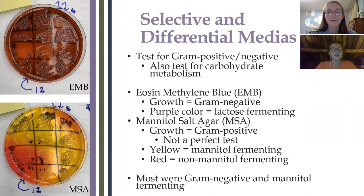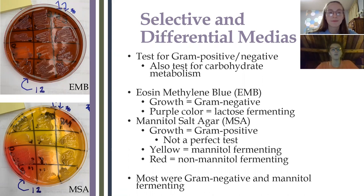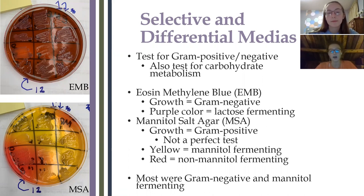We then used selective and differential media that test for gram positive or negative bacteria and for carbohydrate metabolism. Our first plate was an eosin methylene blue plate, which shows growth from gram negative bacteria, and the purple color shows lactose fermenters. Our second plate was a mannitol salt agar plate. Growth is shown for gram positive bacteria, however it is not a perfect test because it doesn't fully inhibit gram negative bacteria. The yellow color shows mannitol fermenting and the red color shows non-mannitol fermenting.